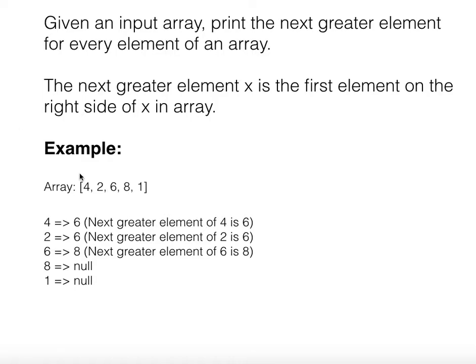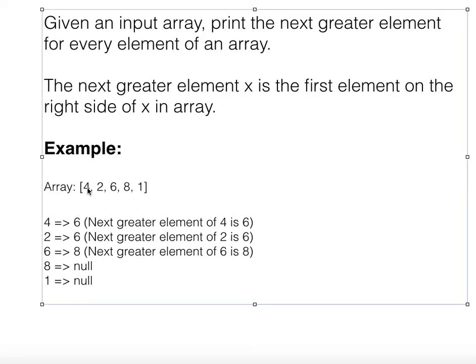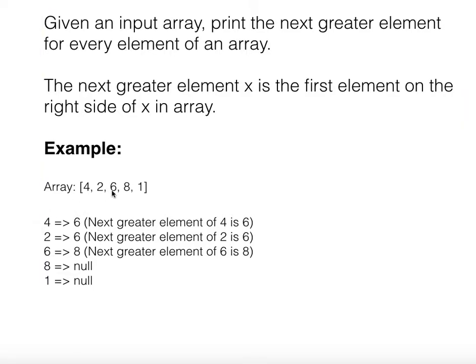For example, let's take an array [4, 2, 6, 8, 1]. The next greater element of 4 is 6, the next greater element of 2 is 6, the next greater element of 6 is 8. The next greater element of 8 is not present — there is no element on the right side of the array which is greater than 8, so it is null. The next greater element of 1 is also null.